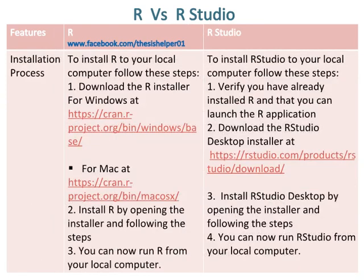To install R to your local computer, follow these steps. First, download the R installer for Windows and for Mac — links are given. Step 2, install R by opening the installer and following the steps. Step 3, you can now run R from your local computer.